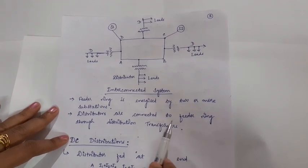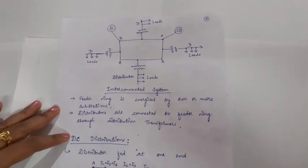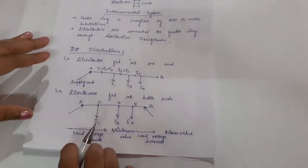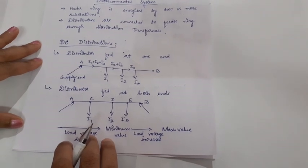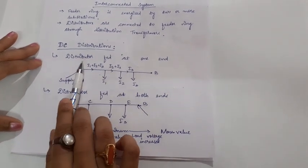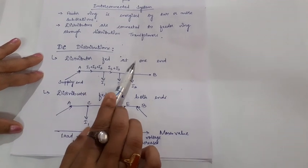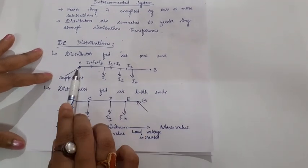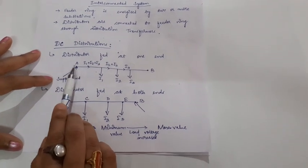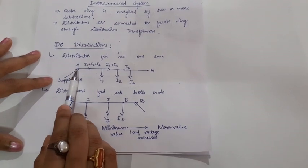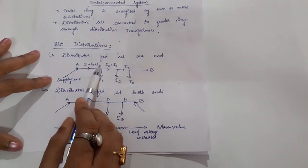So we have completed the different types of distribution system based on the scheme of connection: the radial system, the ring main system, and the interconnected system. Now coming to DC distribution. In DC distribution, we consider three types. The first is when the distributor is fed at one end. Here A and B are the two endpoints. A is at the supply end where electric power is supplied, and point A carries the load currents I1, I2, and I3.